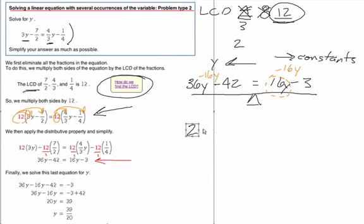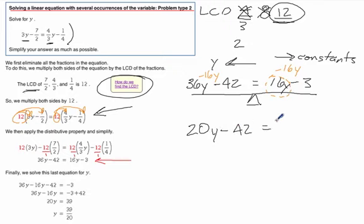So then that gives us 36y minus 16y, which is a 20y. And we still have the minus 42. And then over here, these go away, so we're just left with a negative 3. And that's looking already a lot better.